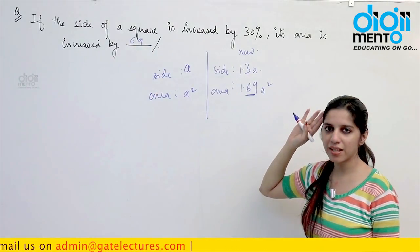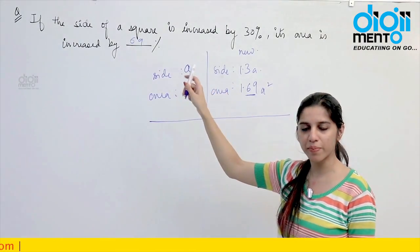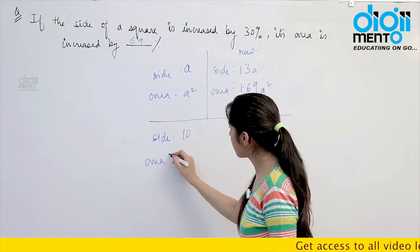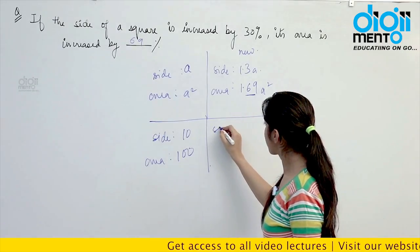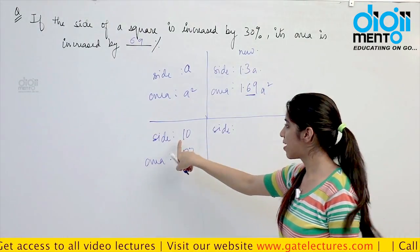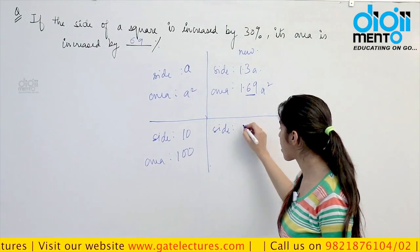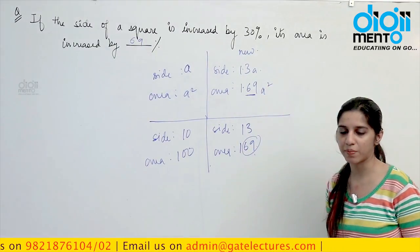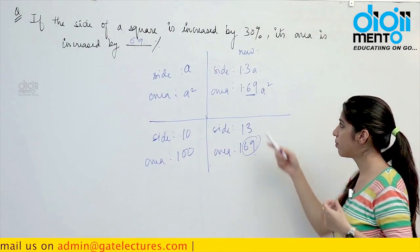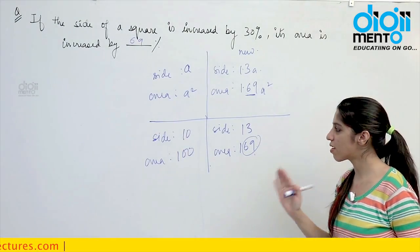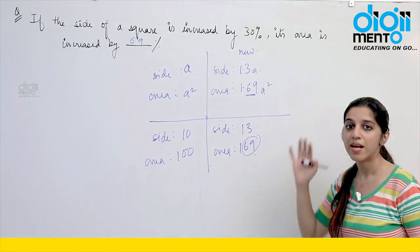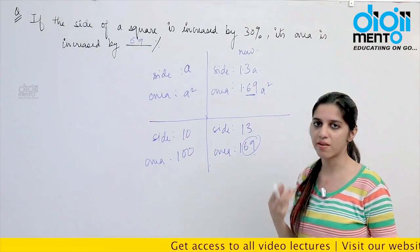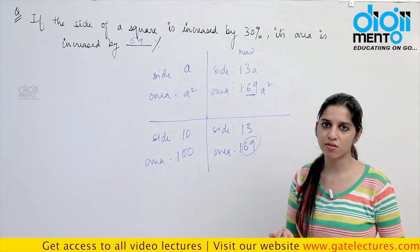If you get confused with the algebraic approach, since the answer is required in percentage, you can consider the side to be 10. Area becomes 100. When 30% increment occurs, 30% of 10 is 3, so side becomes 13 and area becomes 169. Clearly this increases by 69%. I advise: whenever you are considering values, consider powers of 10 or 100 — it is easy to operate with such values.